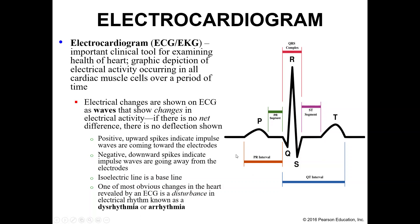Electrical changes are called waves — a P wave, a QRS wave, a T wave. These show changes in electrical activity. If there was no difference, you see flat lines. A positive wave indicates that impulses are moving towards the electrodes placed on your body. If you've ever had an EKG, you know they put electrodes on your chest and other places. A negative downward spike means nerve impulses are moving away from the electrodes. The flat lines, or isoelectric lines, are your baselines.